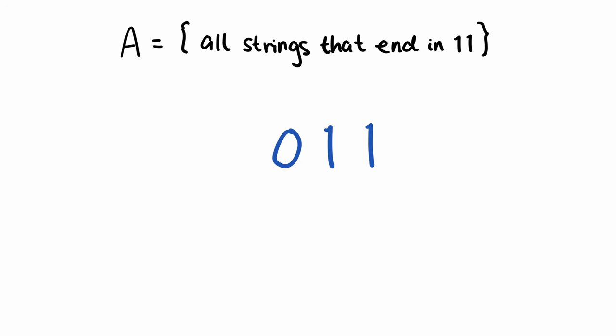For 011, 0 was the part being pumped, and 11 was the part that came after. So in this case, X, the part before pumping, is empty.